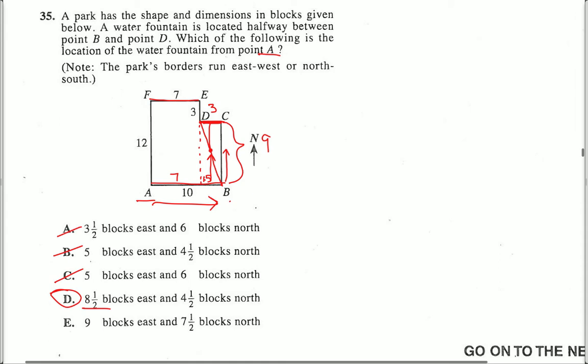Similarly, like I did the last time, this little bit is three. And this full height is 12. So 12 minus three gets me the length CB is nine. Halfway up nine is going to be four and a half blocks north.